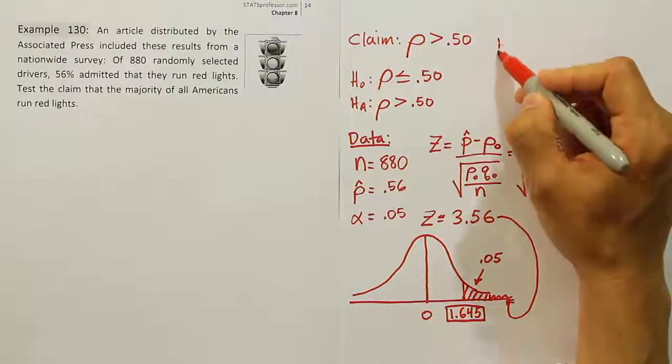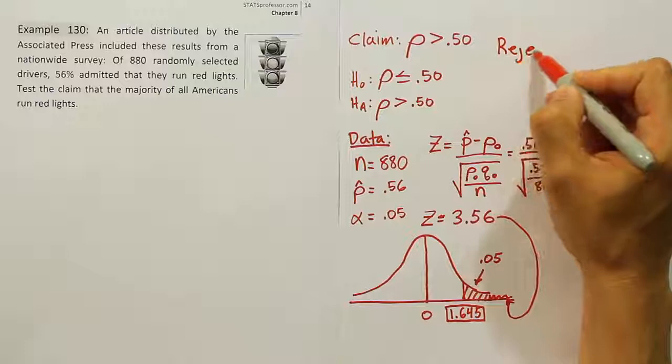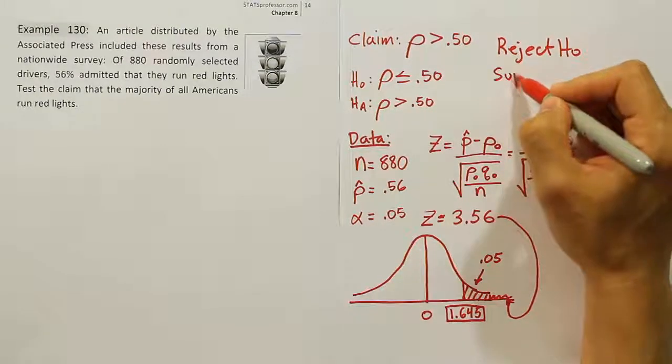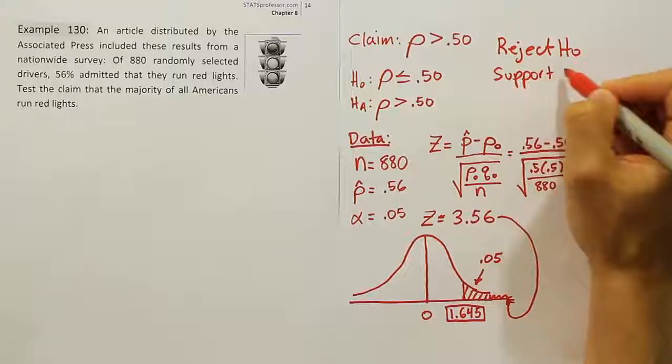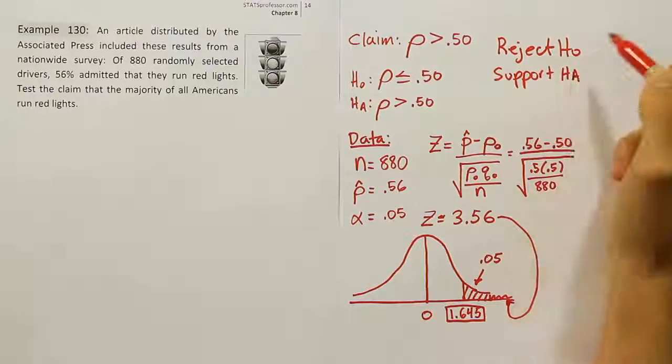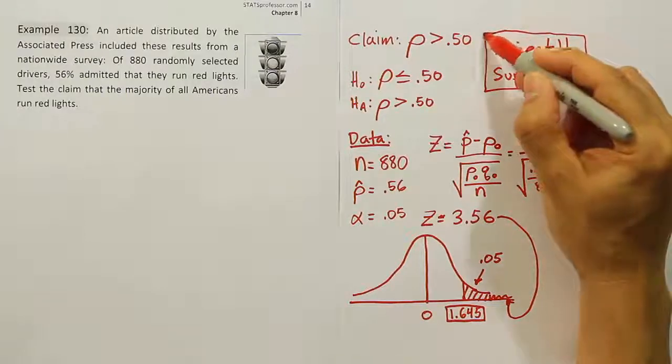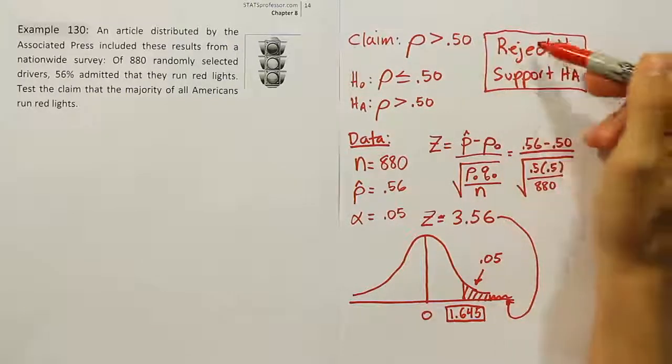It's in our rejection region, so we reject H₀ and support HA. Looking at that pair of conclusions and our original claim, since the claim is the same as HA in this problem,